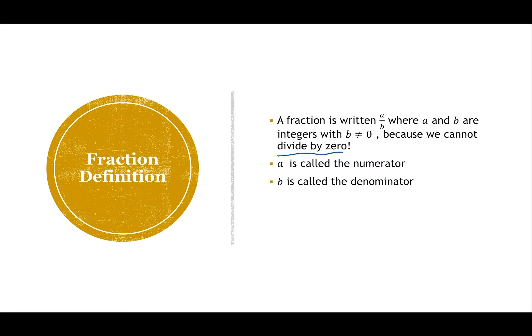It's a piece of something. We're breaking something into parts. I could have one-half, I could have two-thirds. The number on top is called our numerator, and the number on the bottom is called our denominator.